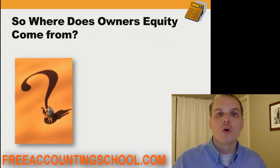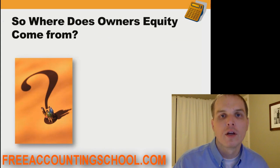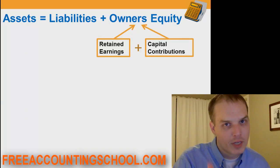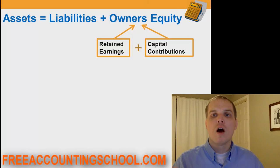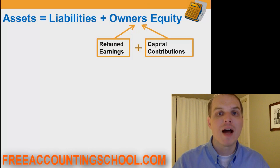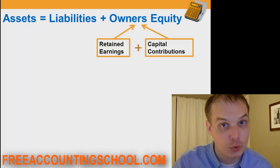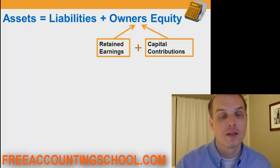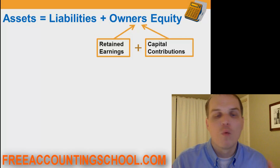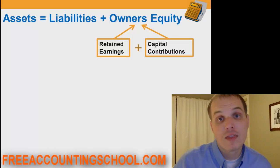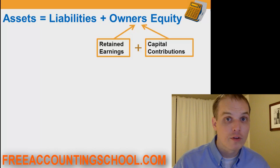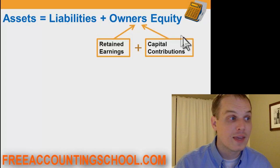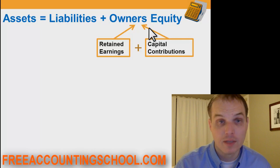So where does owner's equity come from? Owner's equity comes from two things: number one, retained earnings, and number two, capital contributions. Capital contributions are money that comes into a business when someone buys newly issued ownership rights or stock in a business. For example, if you own a car washing business and your cousin says he'll give you $1,000 for 5% ownership, that $1,000 is a capital contribution — and that would be one of the accounts that is part of the owner's equity dollar value.